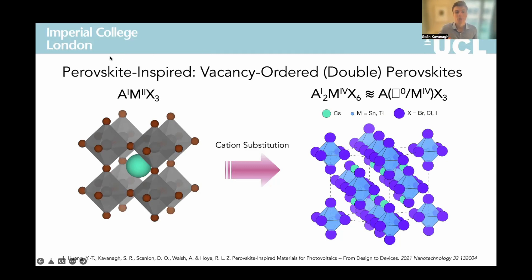In this structure, the perovskite AMX3 motif is doubled, and the divalent metal cation — i.e. lead — is partially replaced by a tetravalent cation, such as tin or titanium, with 50% of the cation sites left unoccupied in order to satisfy charge balance.